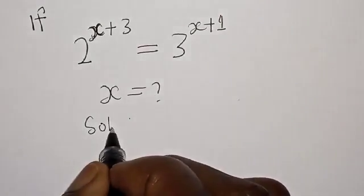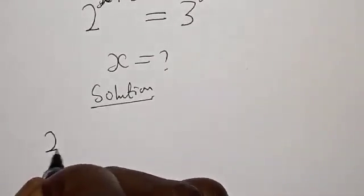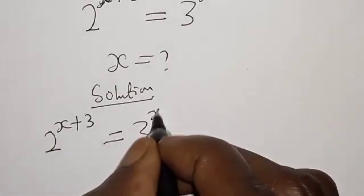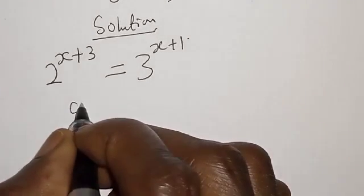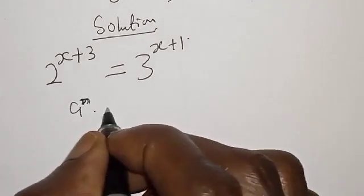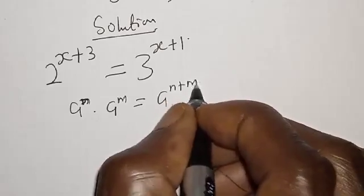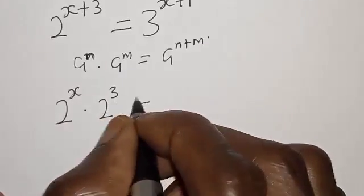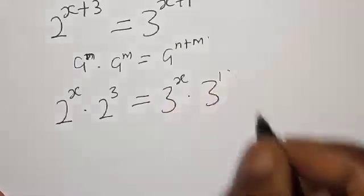Solution. We have 2 raised to power x plus 3 is equal to 3 raised to power x plus 1. Using the exponent rule that a raised to power n multiplied by a raised to power m equals a raised to power n plus m, we expand: 2 raised to power x multiplied by 2 raised to power 3, is equal to 3 raised to power x multiplied by 3 raised to power 1.